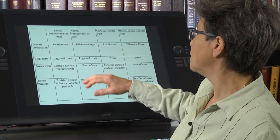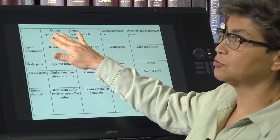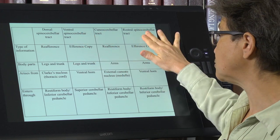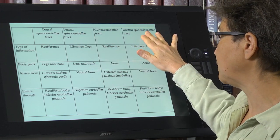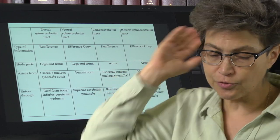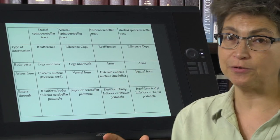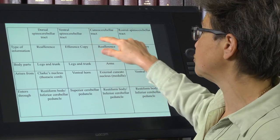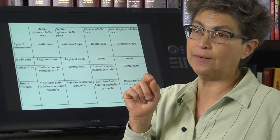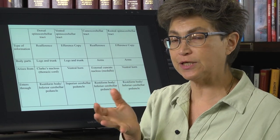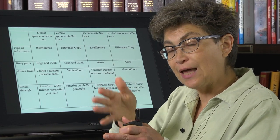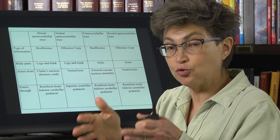The four tracts are: the dorsal spinocerebellar tract, the ventral spinocerebellar tract, the rostral spinocerebellar tract, and the cuneocerebellar tract. They're not all spinocerebellar tracts — the cuneocerebellar tract actually comes from a nucleus called the external or accessory cuneate nucleus, which is just lateral to the cuneate nucleus of the dorsal column nuclei.